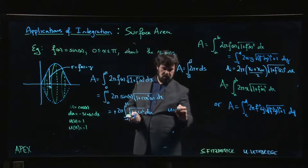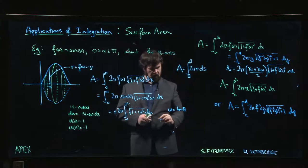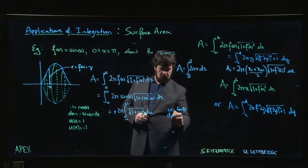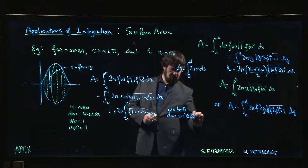This time we're going to let u equal to tan theta. Du will be secant squared theta times d theta.